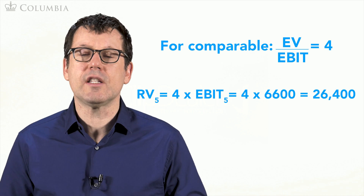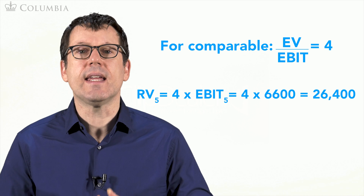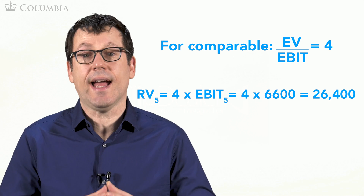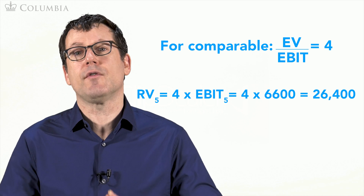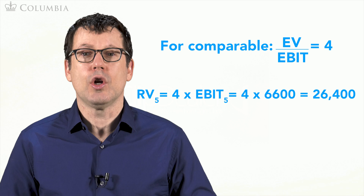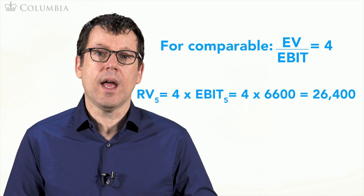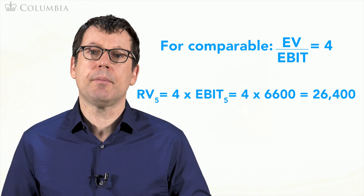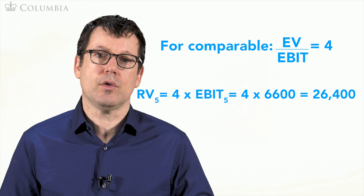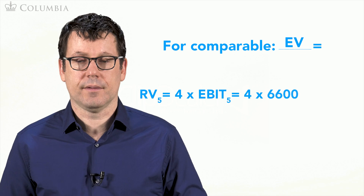We would treat this 26,400 in the same way we treated the other estimate for the residual value. We discounted it 5 years to year 0 and added it to the present value of the free cash flows in years 1 to 5.